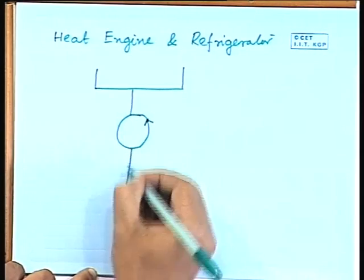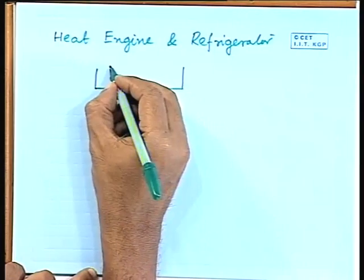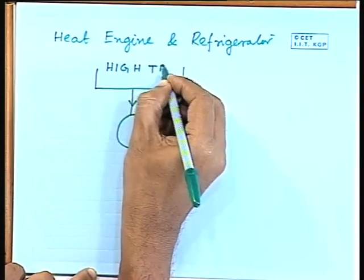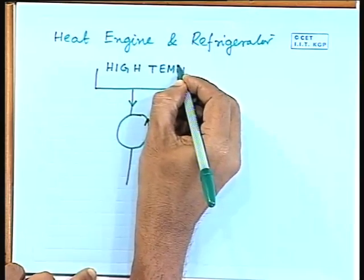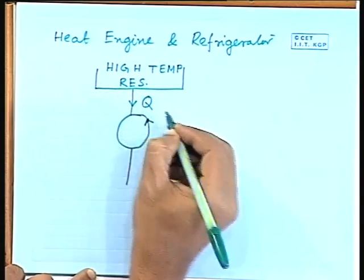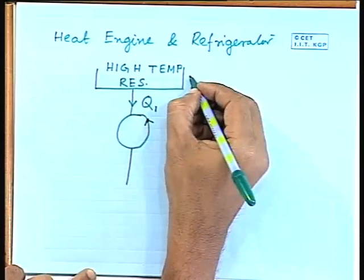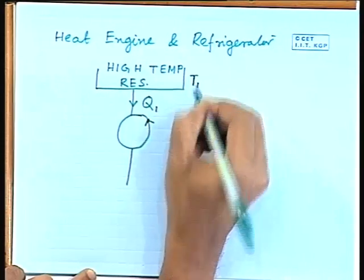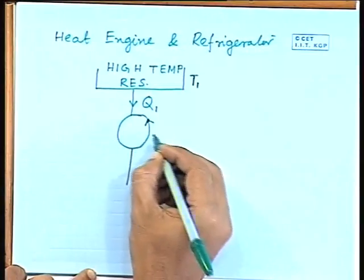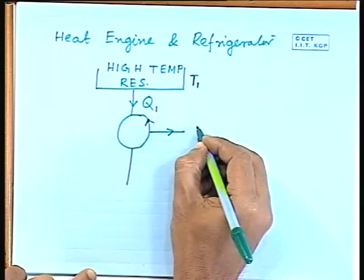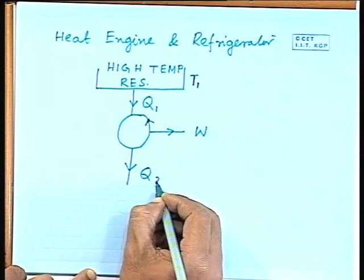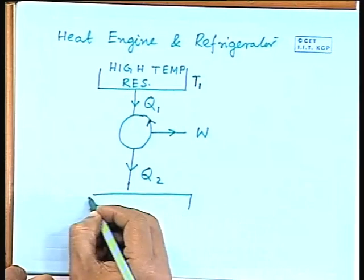This device operates in a cycle and takes heat from a high temperature reservoir. Let us say this is taking Q1 amount of heat. This high temperature reservoir is kept at a constant temperature. Q1 converts part of the heat into work W, and then rejects the rest, which is Q2, to a low temperature reservoir.